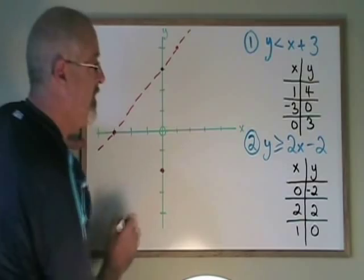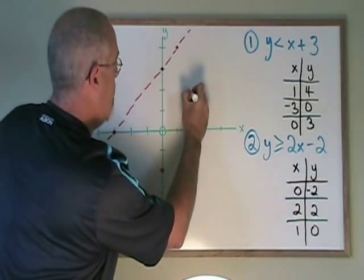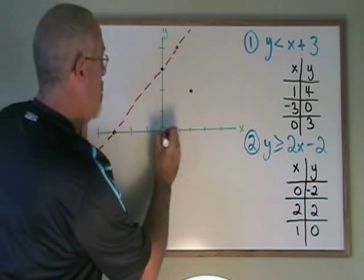0, negative 2 goes here. 2, 2 goes here. And 1, 0 goes here.